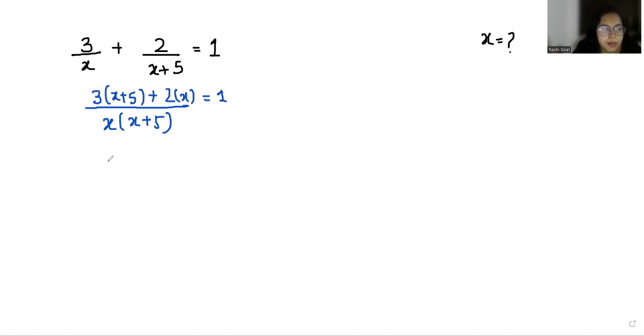So in the numerator it becomes 3x + 15 + 2x over x² + 5x equals 1/1. Now I am going to do the cross multiplication.